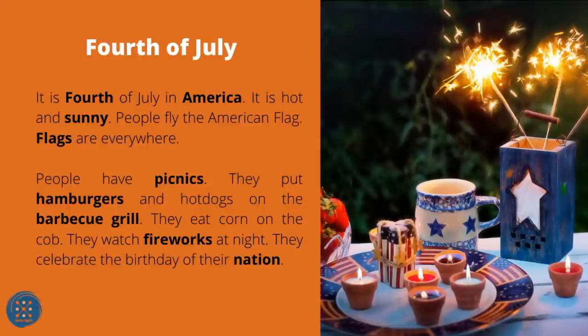4th of July. It is 4th of July in America. It is hot and sunny. People fly the American flag — flags are everywhere. People have picnics. They put hamburgers and hot dogs on the barbecue grill. They eat corn on the cob. They watch fireworks at night. They celebrate the birthday of their nation.